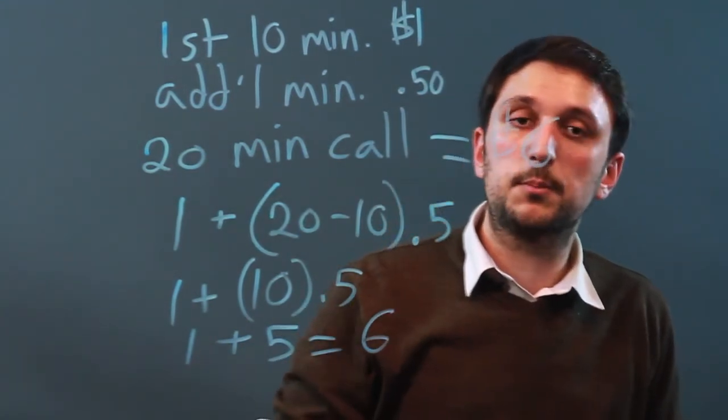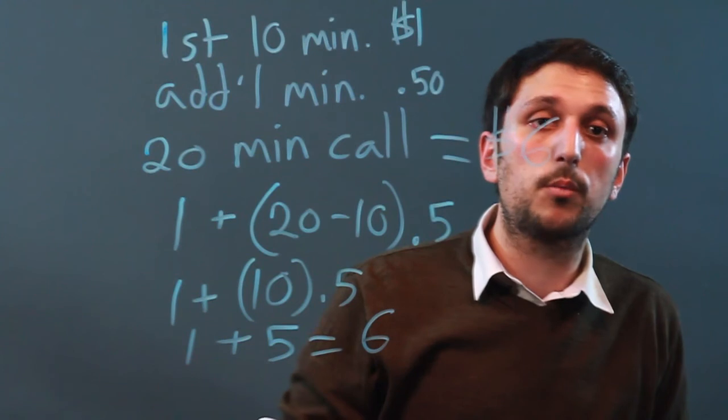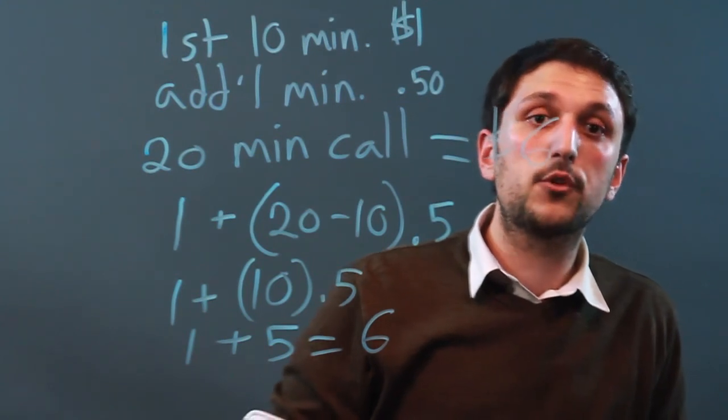So that is an example of how a two-step equation represents real-world problems. I'm Charlie Kasov. Thanks a lot.